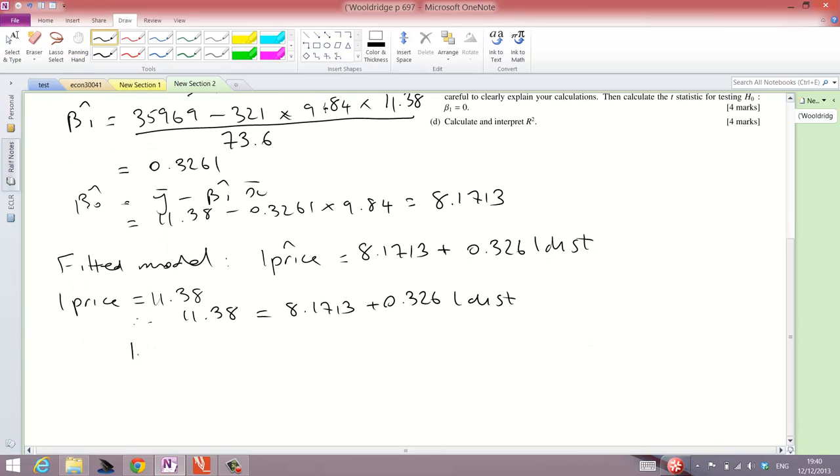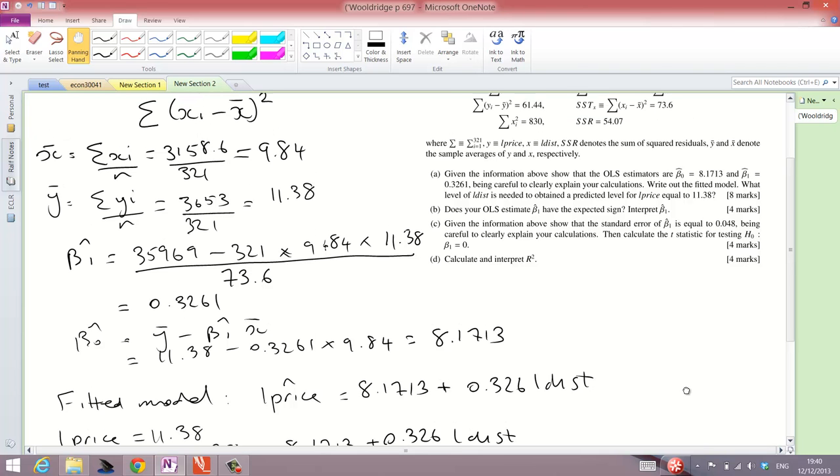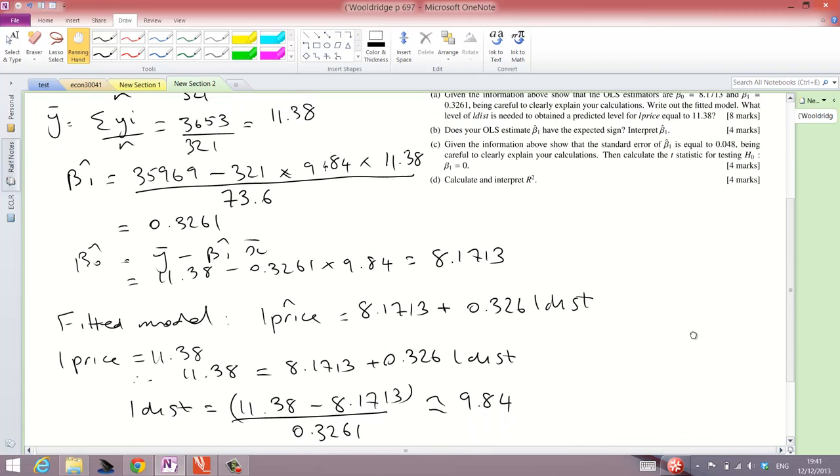We can rearrange this. L dist equals 11.38 minus 8.1713 divided by 0.3261, which gives us roughly 9.84. So, that is the predicted level of distance there. That's question A.